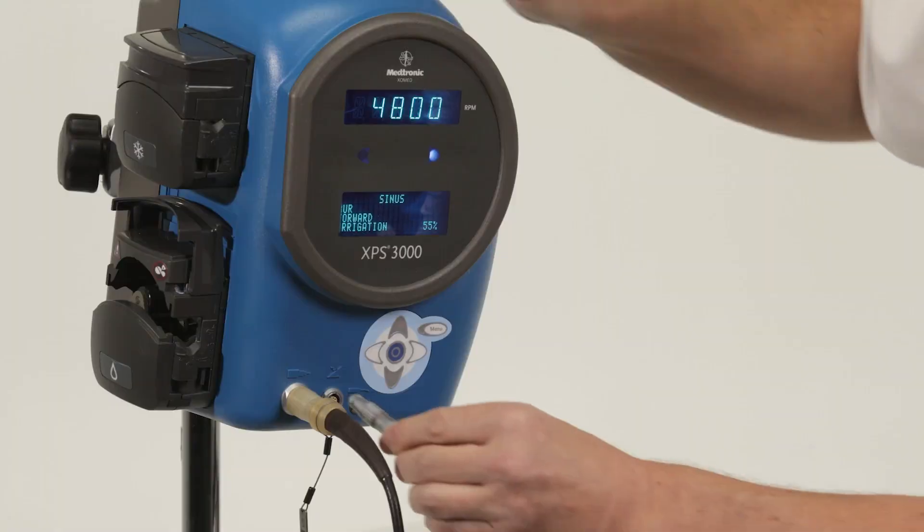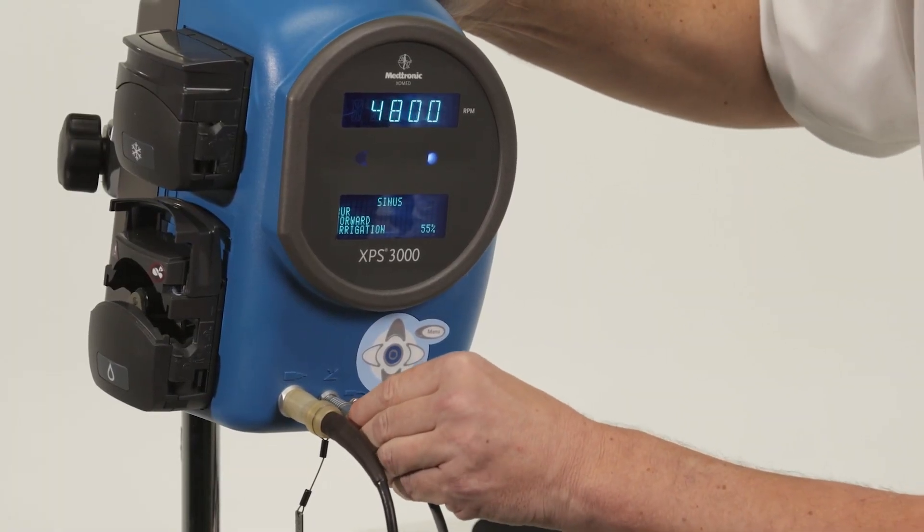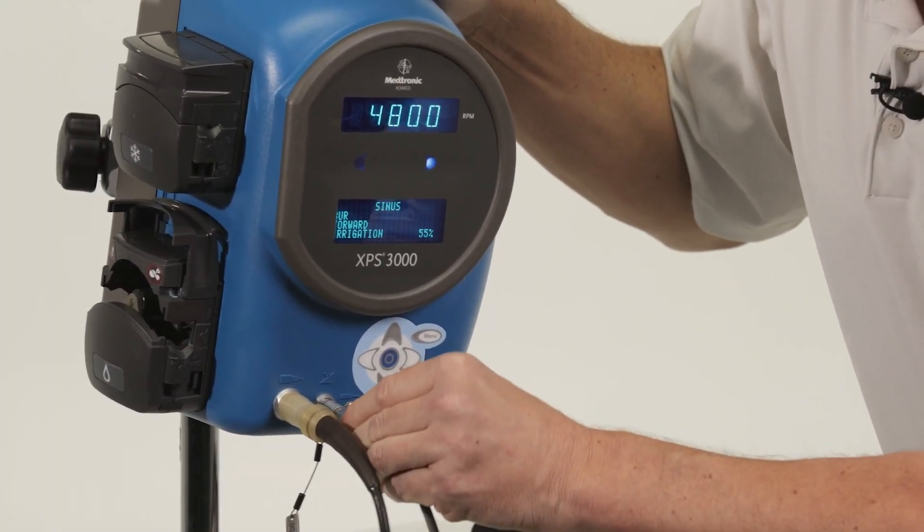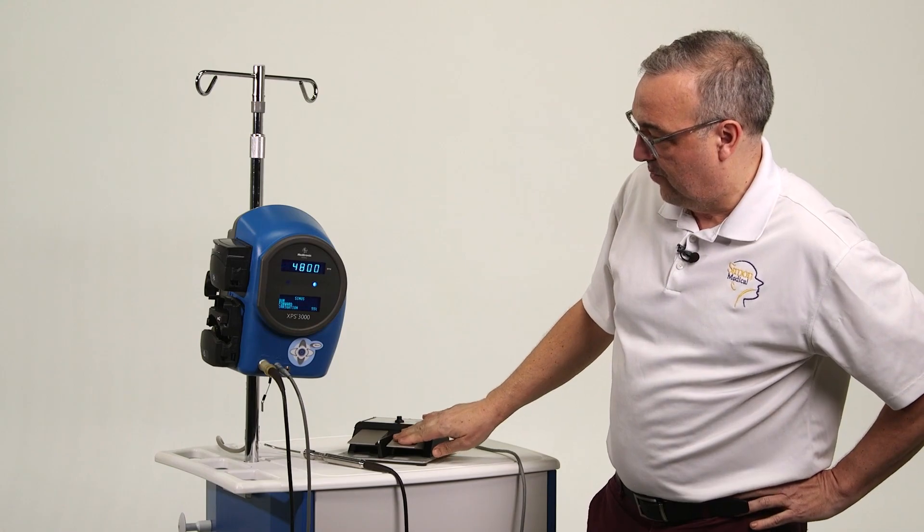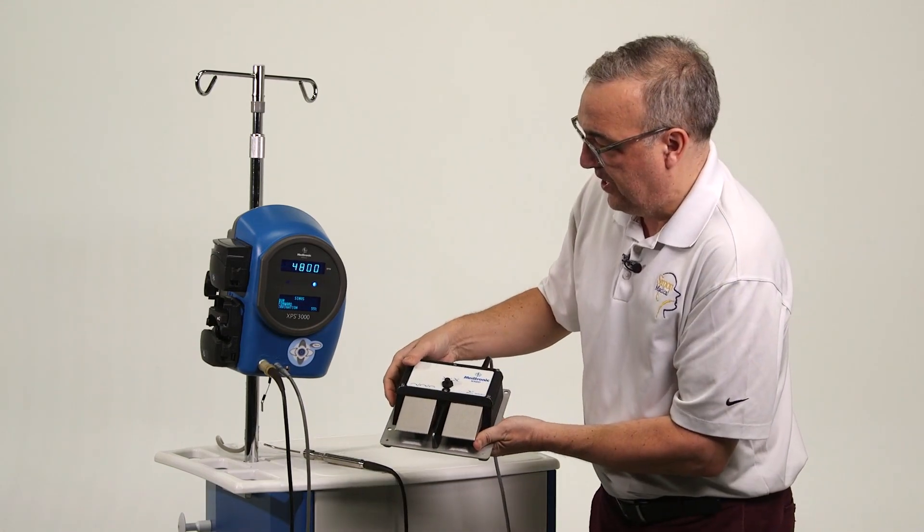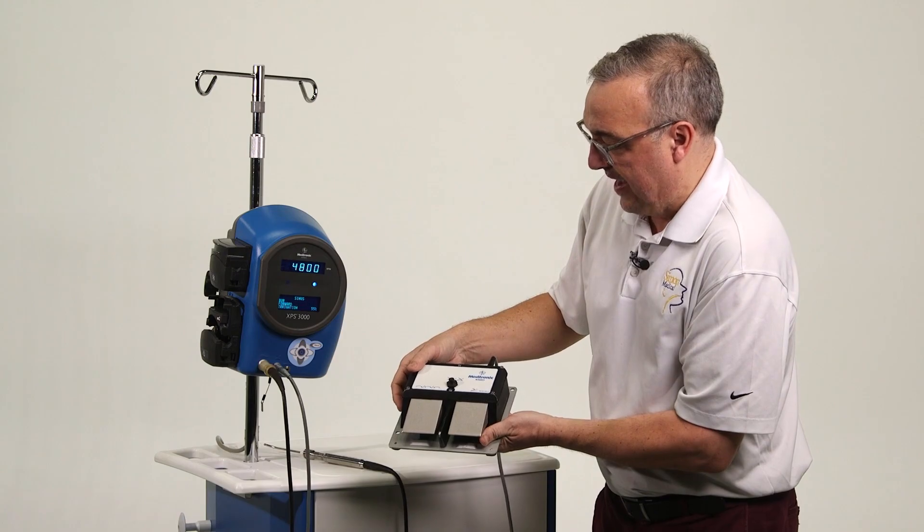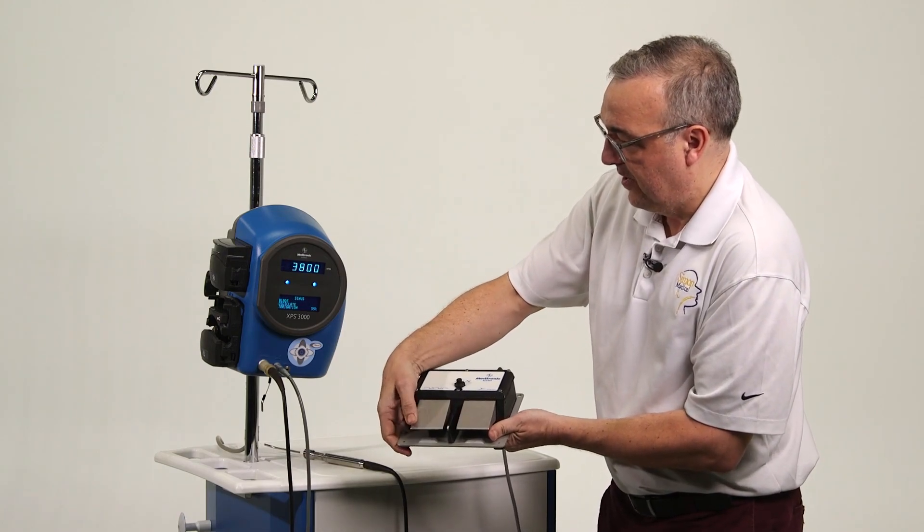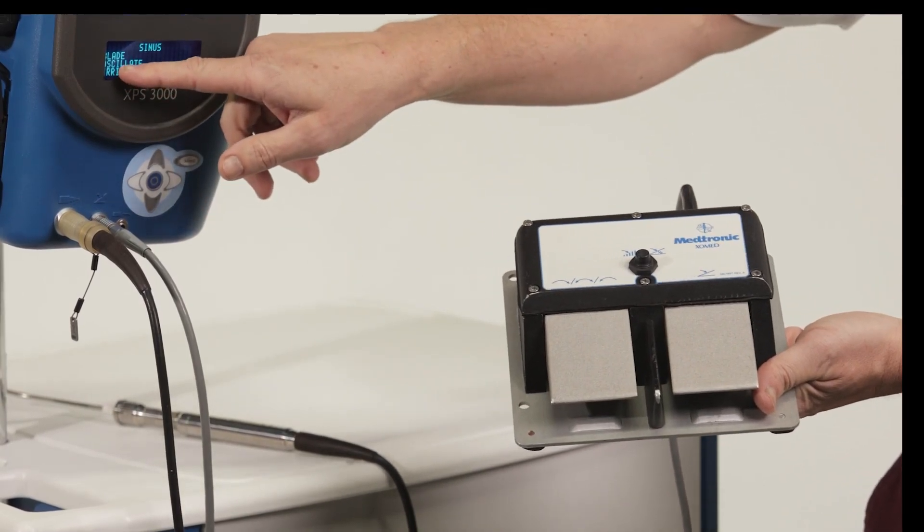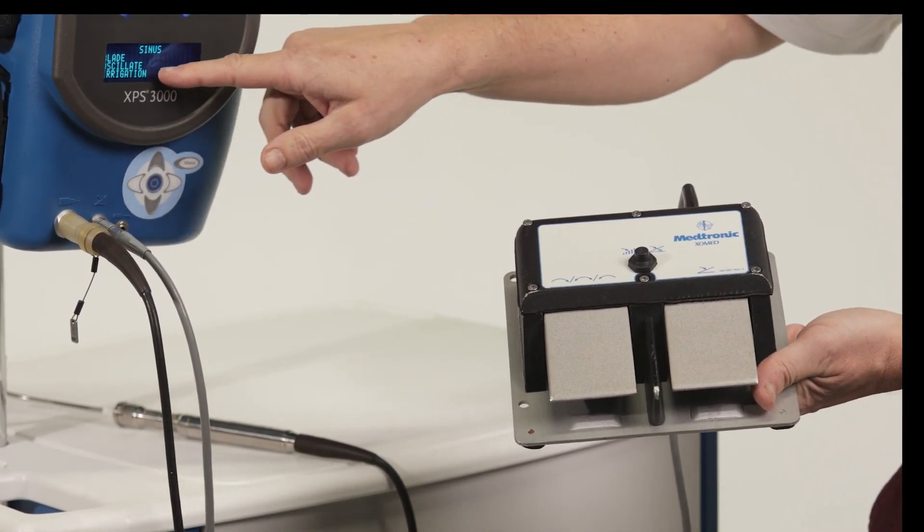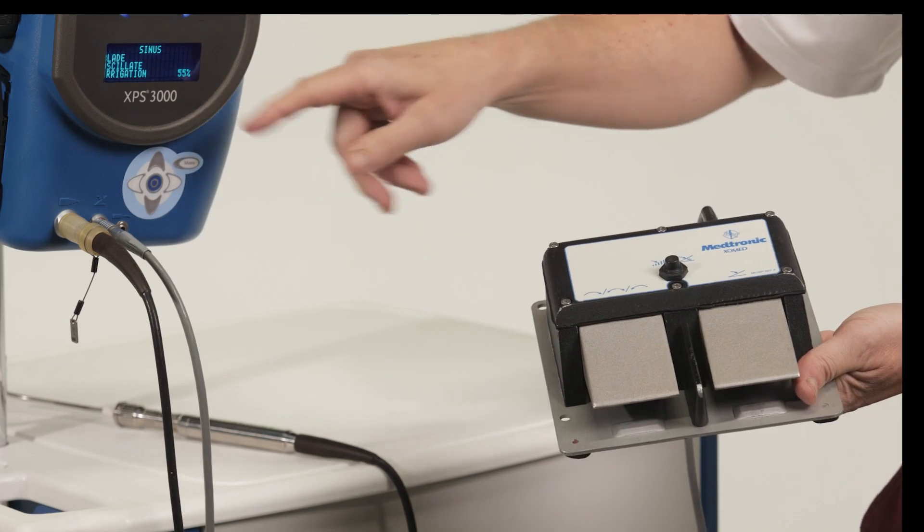Again, red dot up, especially if you're in a dark OR, it makes it much easier to try to plug this in. Now we've got the foot pedal controlled and we can actually do what we've done. If we want to change that from forward to oscillate, we simply press the left key, the left foot pedal, and we've changed from burr forward to oscillate for sinus blades.